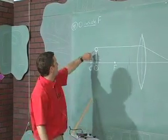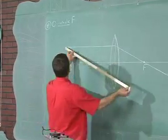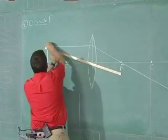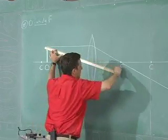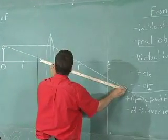Our second ray is a ray from the top of the object right through the center of curvature. So we're going to set up our ruler or meter stick here rather, and zip this line straight through the center of curvature.